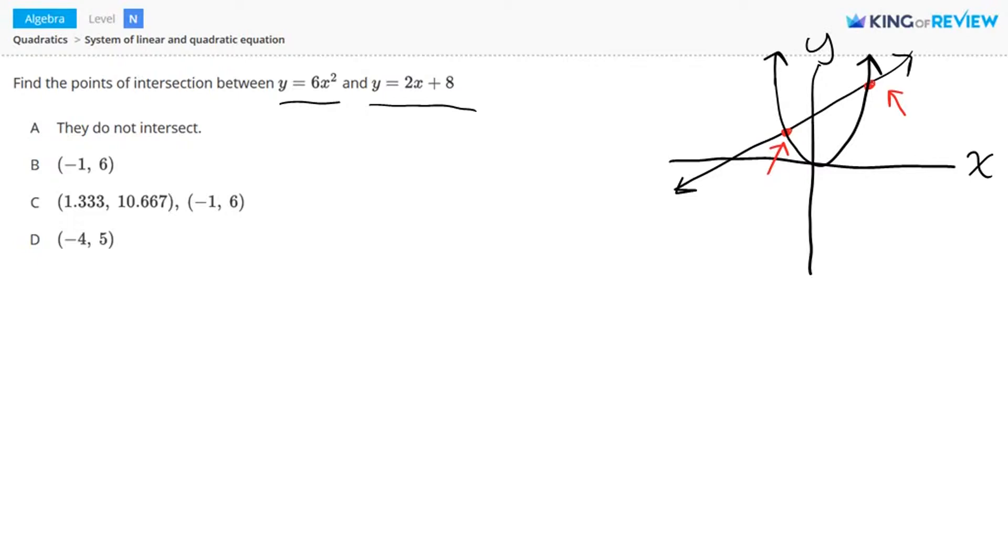One method for solving this is to use substitution. We have an equation for y, y equals 6x squared, and we can substitute in this 6x squared in for this y value here. So let's do that. We have 6x squared equals 2x plus 8. Now I want to move all the terms over to the left hand side so that I can have a zero on the right side. So I'll subtract 2x on both sides, and I'll subtract 8 on both sides. This leaves us with 6x squared minus 2x minus 8 equals zero.